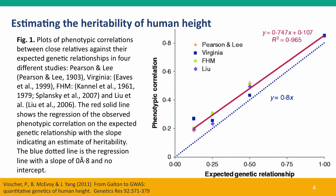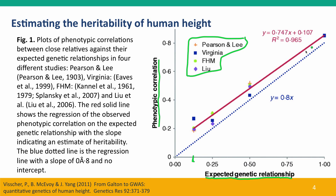The first studies we're going to look at investigated the heritability of human height, and they used a wide range of levels of relationship to measure the correlation between height similarities and genetic relatedness. Genetic relatedness is plotted along the x-axis, ranging from about 0.125, which is the relationship between cousins, to 1.0, which is the expected relationship between identical twins. The level of correlation of their heights is plotted on the y-axis, and we see a very good fit to a straight line, suggesting a very strong correlation between how many genes people share and how similar their heights are.